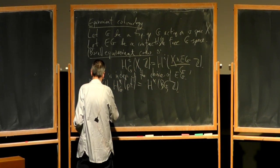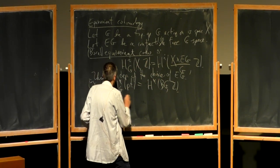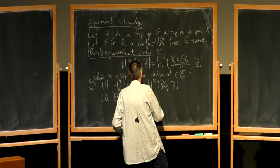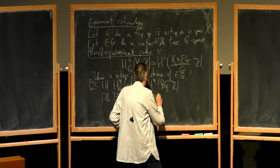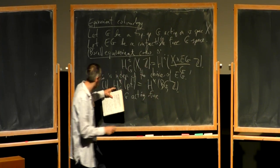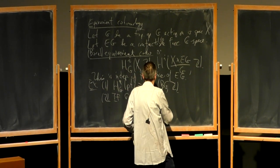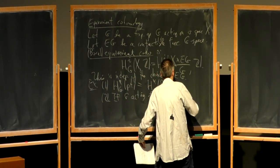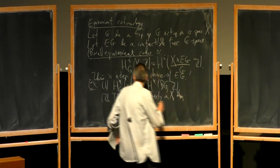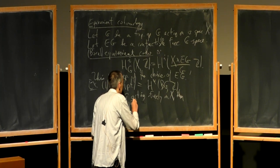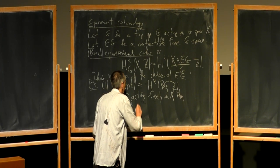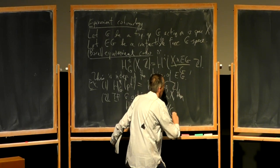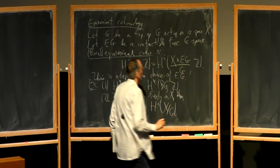Secondly, if the group is acting freely on X — which is sort of the opposite from case number one — then equivariant cohomology is just the cohomology of the quotient space.